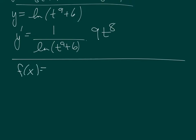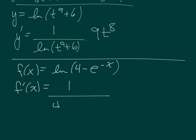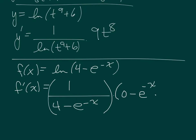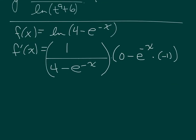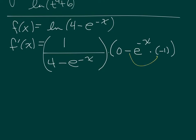f of x equals ln of 4 minus e to the negative x. The derivative of ln of anything is 1 over the anything times the derivative of the anything. The derivative of 4 is 0, so we have 0 minus the derivative of e to the anything, which is e to the anything times the derivative of the anything — meaning the derivative of negative x, which is negative 1. I have a negative and a negative, so that becomes a positive e to the negative x, all over 4 minus e to the negative x.